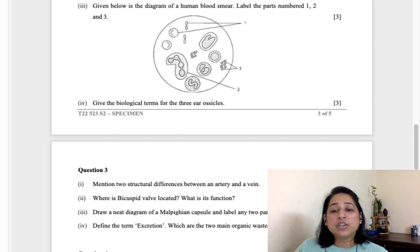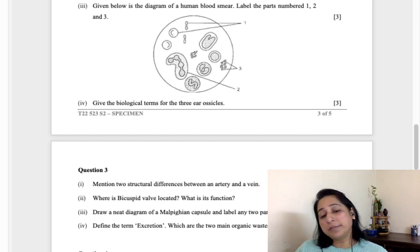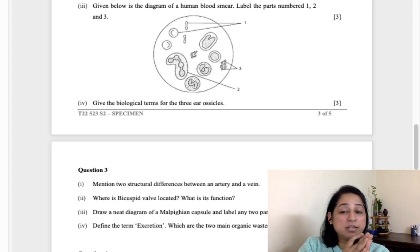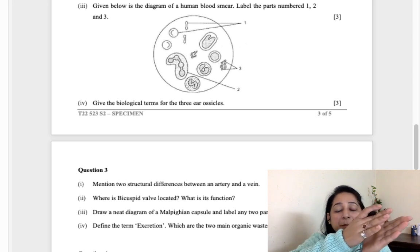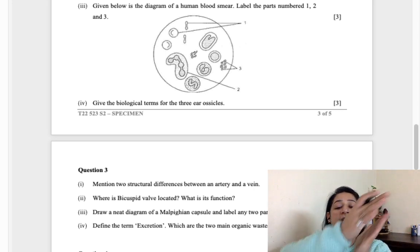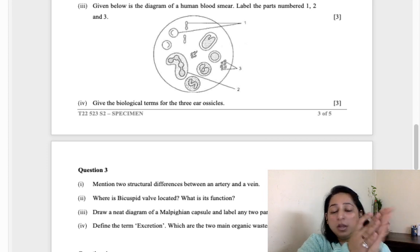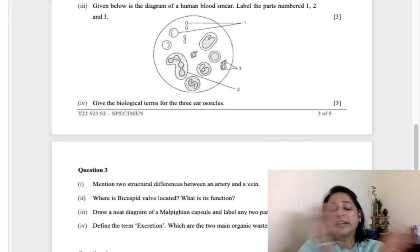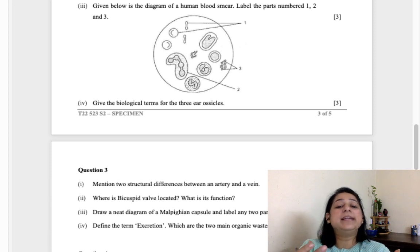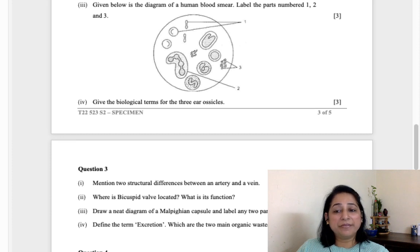Next is give the location of pericardial fluid, what is its function? Pericardial fluid is a fluid which is present between two pericardial layers of the heart. What is its function? It acts as a cushioning layer and does not allow any friction between the two pericardial layers. When the pumping of the heart takes place, the layers rub against each other but this pericardial fluid prevents any damage to them.